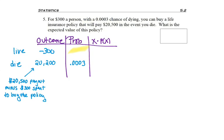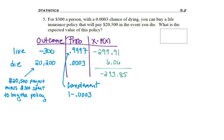But now I need the probability that I live. And if you remember, that would just be the complement. So 1 minus .0003. So there's a .9997 chance of living. So now, as I multiply across the first row, negative 299.91. As I multiply across the second row, $6.06.